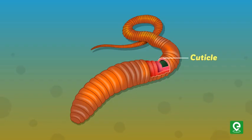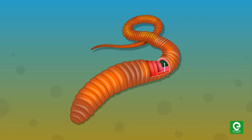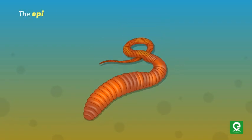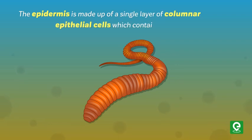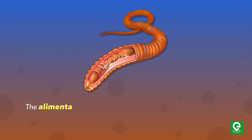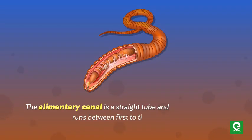The body wall of the earthworm is covered externally by a thin non-cellular cuticle, below which is the epidermis, two muscle layers, and an innermost coelomic epithelium. The epidermis is made up of a single layer of columnar epithelial cells which contain secretory gland cells. The alimentary canal is a straight tube and runs between the first and last segment of the body.